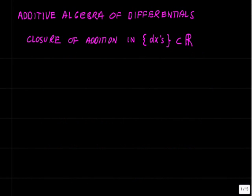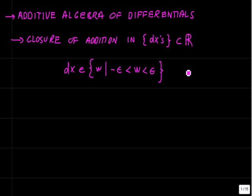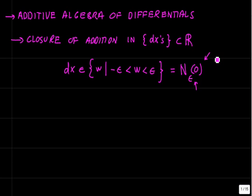Welcome to the next part in our discussion of the algebraic structure of differentials. Today we're going to look at the construction of an additive algebra of differentials, and particularly address the problem of closure of addition on the set of arbitrarily small numbers contained in the real numbers. We're using the notion that differentials are going to be in an epsilon neighborhood of 0, denoted N-epsilon of 0. This notation describes a set of points on the real number line — it doesn't depend on the variable, whether you pick w or dx or anything else. This is an open set and an element of the topology of the real numbers.